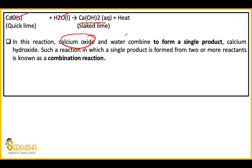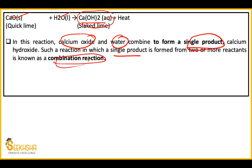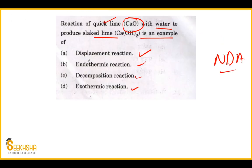Calcium oxide and water are two compounds that combine to create a single product Ca(OH)2. Heat is not a compound. So when two reactants form a single product, it is called a combination reaction. This reaction is also exothermic because a large amount of heat is released. So this reaction is actually BOTH a combination reaction AND an exothermic reaction. If combination reaction wasn't in the options, the answer would be exothermic reaction.